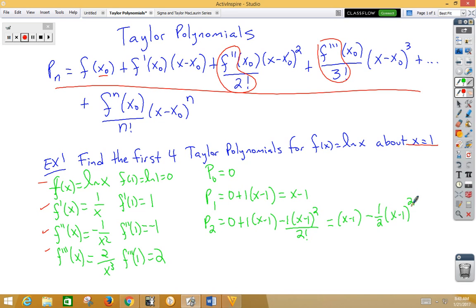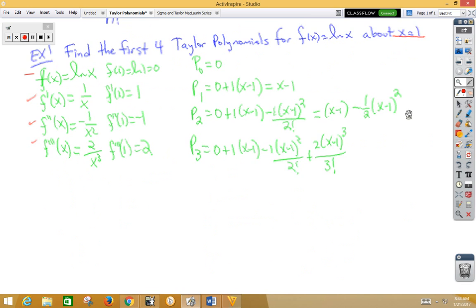Then our third degree Taylor polynomial, which would give us four total polynomials. We have 0 plus 1 times x minus 1 minus 1 x minus 1 squared over 2 factorial, plus 2 x minus 1 cubed over 3 factorial. If I pull this up so I can have a little bit more room, we could simplify that down a little bit more.